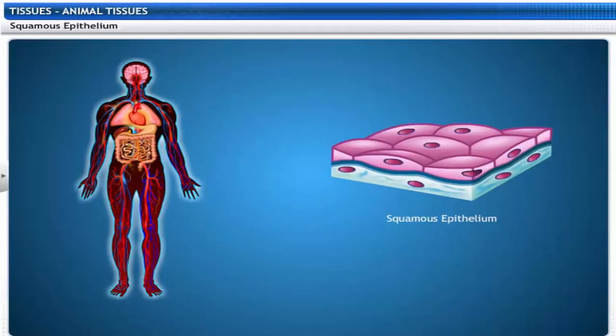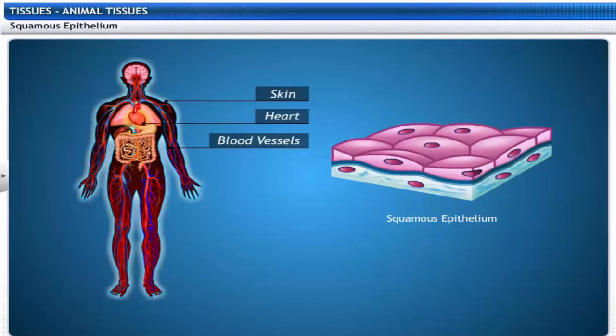Squamous epithelium has flat and thin cells. These cells group together and do not have intercellular spaces between them. They are found in the outer layer of the skin, lining the cavities of ducts, blood vessels, and the chambers of the heart, and provide mechanical support.